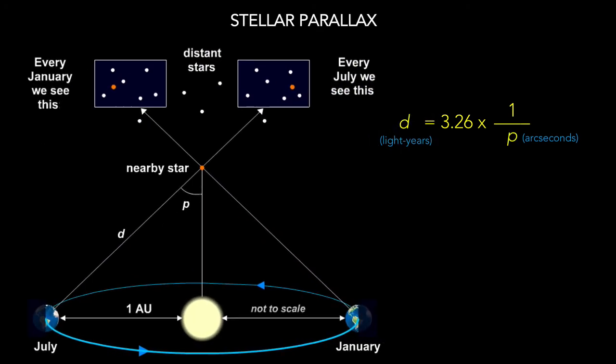As another example, if the parallax angle were 1 tenth of an arcsecond, the star would be 10 times farther, or 32.6 lightyears away.